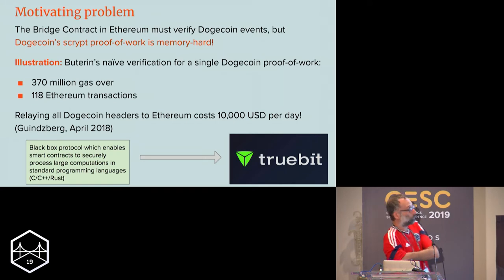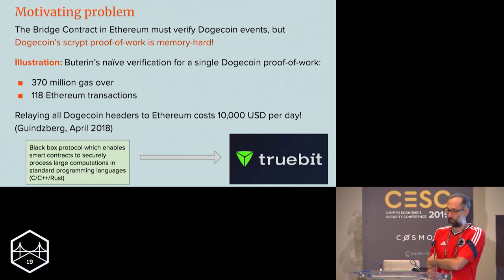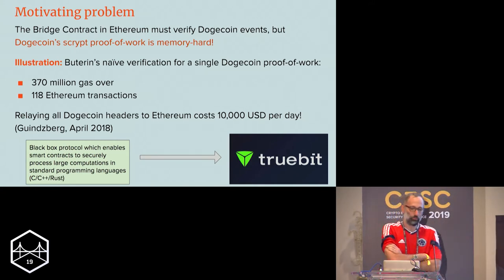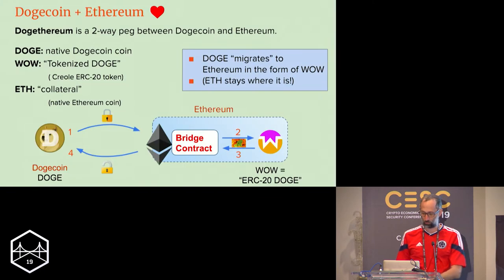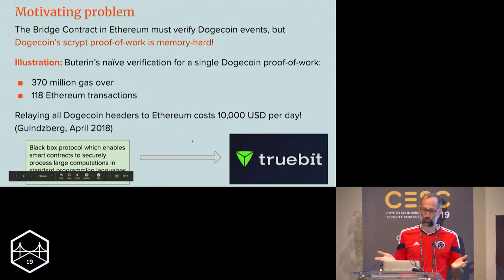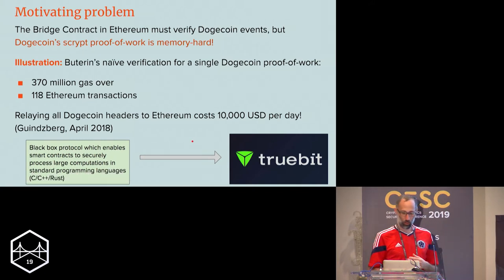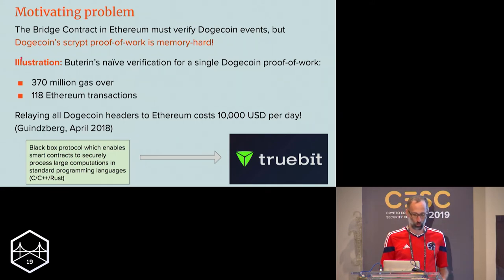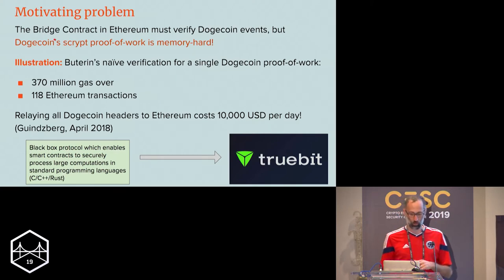For the motivating problem — especially for Truebit — the bridge contract in Ethereum has to be able to verify Dogecoin events. At the very least, this means we have to check Dogecoin proof of work. Dogecoin's Scrypt proof of work is memory-hard.